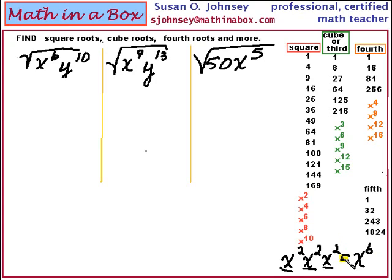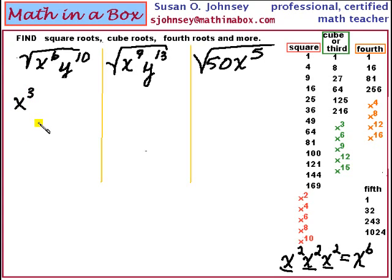Let's look at our first example. What is the expression that you can write down twice and get x to the sixth? That would be x to the third. If you write x to the third down twice and multiply, you will have x to the sixth. What can you write down twice and get y to the tenth? It would be y to the fifth.